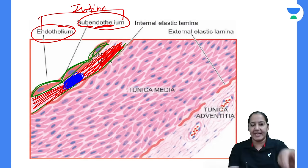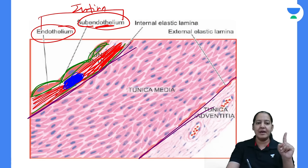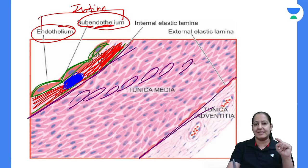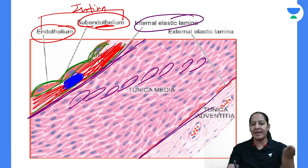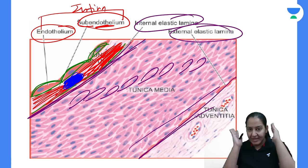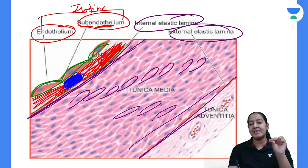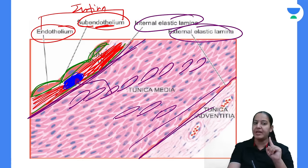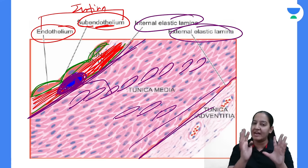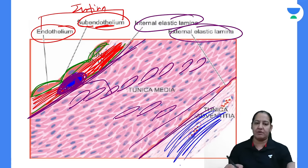The media is the thickest layer, containing multiple smooth muscle cells. It is bounded by two boundaries: the inner boundary is the internal elastic lamina and the outer boundary is the external elastic lamina. In atherosclerosis, smooth muscle cells from the media migrate to the subendothelial layer of the intima, where they proliferate and constitute the atherosclerosis. The outermost layer, the tunica externa, is loose connective tissue.